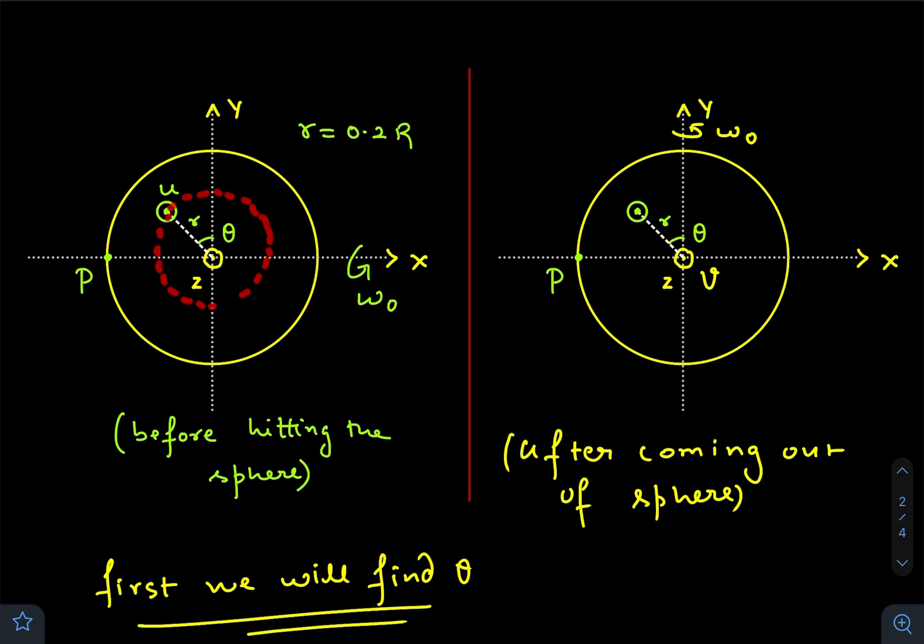I have considered that the bullet is hitting at this point at a distance 0.2 capital R, and it makes an angle θ. This line makes an angle θ with the positive y-axis.